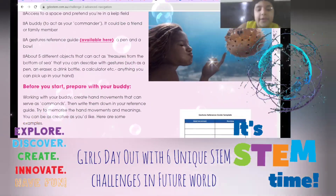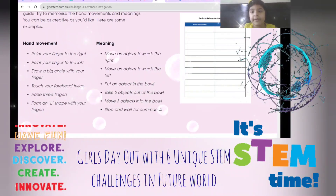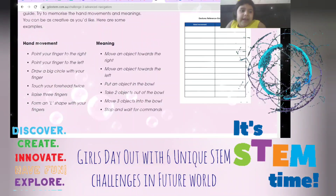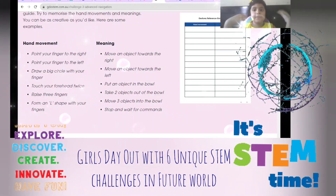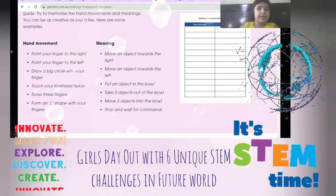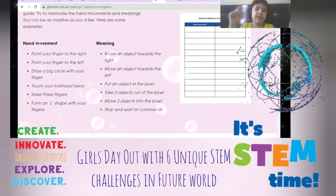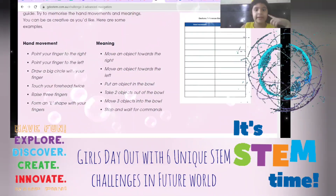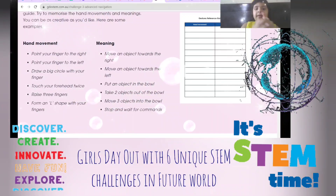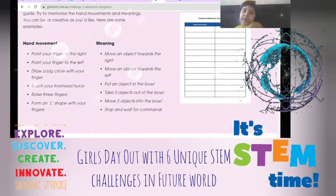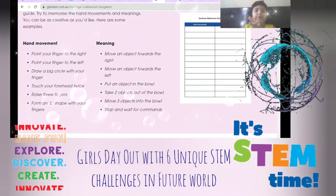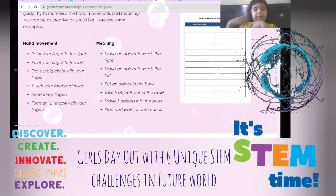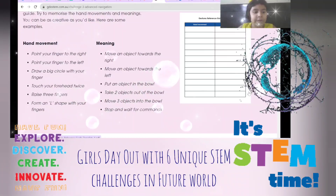Here's the first activity: you take a partner and do hand movements. For example, if I point my finger to the right, it means move an object to the right; left means move the object to the left; draw a big circle with your finger to put an object in a ball. That's a few of the gestures.